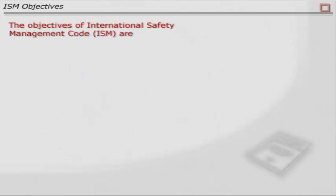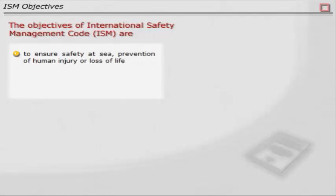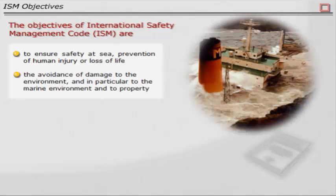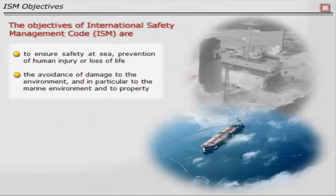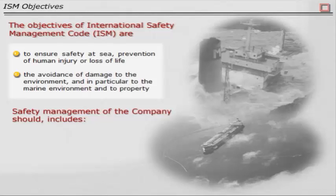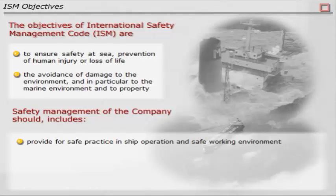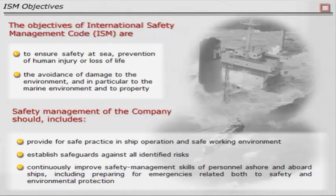The objectives of the International Safety Management Code (ISM) are: to ensure safety at sea, prevention of human injury or loss of life, and the avoidance of damage to the environment, in particular to the marine environment and to property. Safety management of the company should, inter alia, provide for safe practice in ship operation and a safe working environment, establish safeguards against all identified risks, and continuously improve safety management skills of personnel ashore and aboard ships, including preparing for emergencies related both to safety and environmental protection.